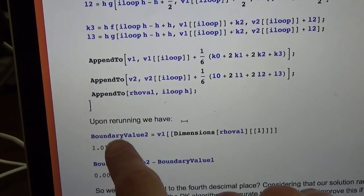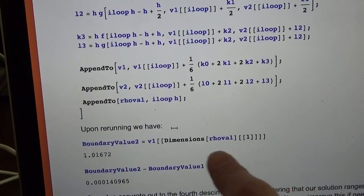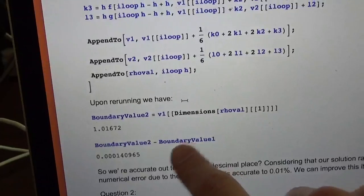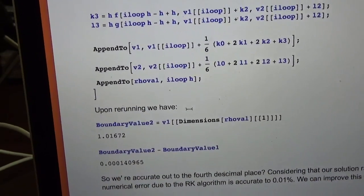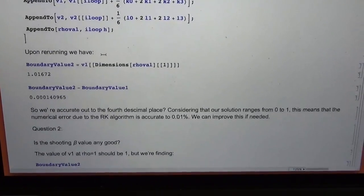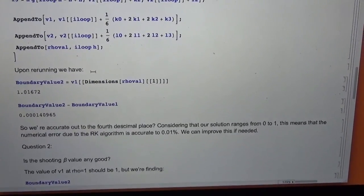We get boundary value 2, which is this, which is close. It turns out boundary value 1 and boundary value 2 using 20 and 30 points matched within the fourth decimal place, which is pretty good. It's probably good enough for what we're doing.